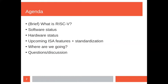What we're going to talk about today: we'll briefly cover what RISC-V is, the software status from the perspective of FreeBSD, the hardware status in relation to what hardware is available and what FreeBSD supports, upcoming changes to the RISC-V spec and the standardization process, and my perspective on where we are going as an operating system supporting this architecture. Then we'll end with questions and discussion.